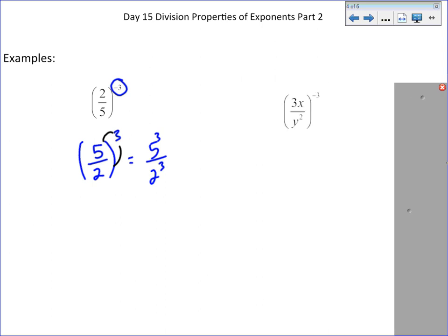Look at another example. Again, we have a fraction to a negative power. So we flip the fraction, y to the 2nd over 3x, and then it becomes to the positive 3rd power. So we now fixed that negative exponent. This then distributes to everything. Be careful, because it also distributes to that 3, and we're left with y to the 2nd to the 3rd power over 3 to the 3rd, x to the 3rd.